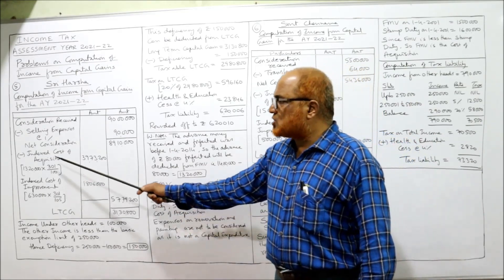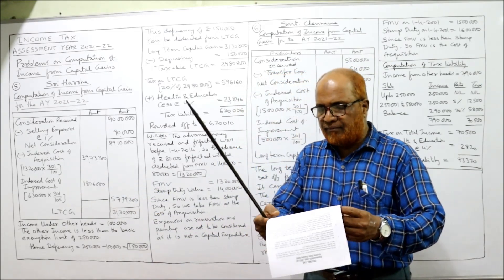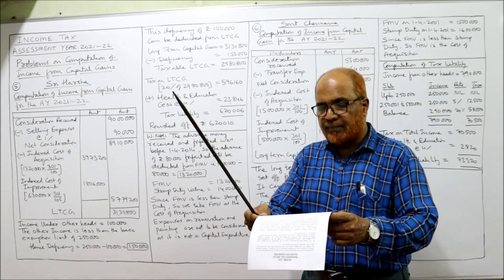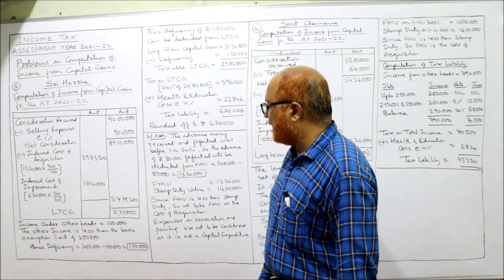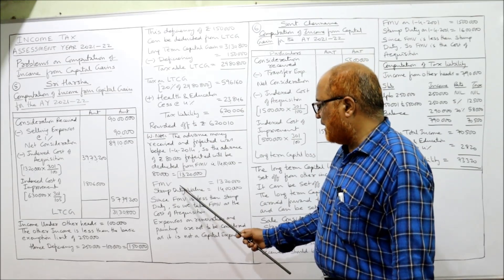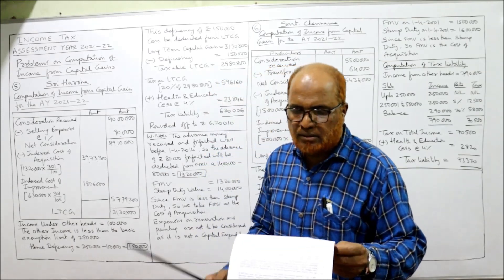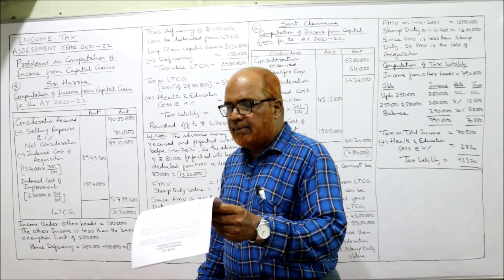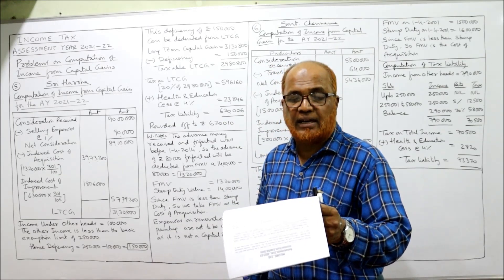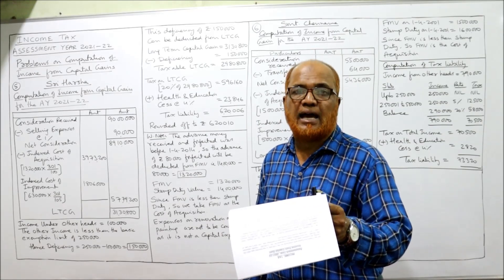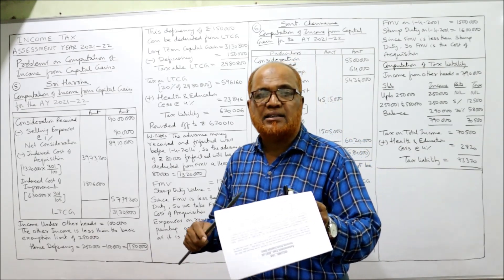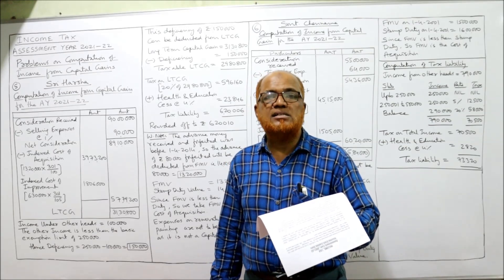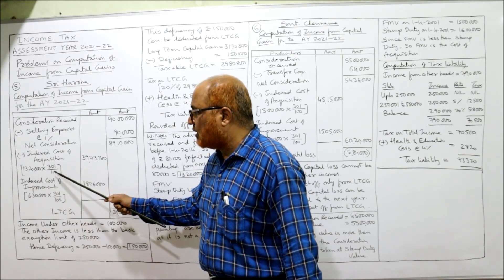What is the fair market value? The FMV is given as Rs. 15 lakh but the stamp duty value is Rs. 14 lakh. Since the FMV should not exceed the stamp duty value, we use Rs. 14 lakh. From this, the advance money of Rs. 80,000 — received and forfeited before 1-4-2014 — is deducted. So Rs. 14 lakh minus Rs. 80,000 equals Rs. 13,20,000. The indexed cost of acquisition is Rs. 13,20,000 × 301/100 = Rs. 39,73,200.